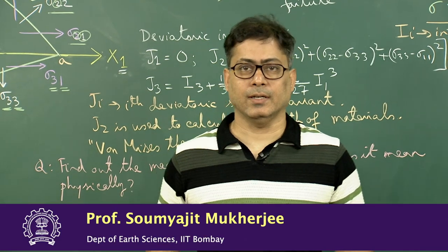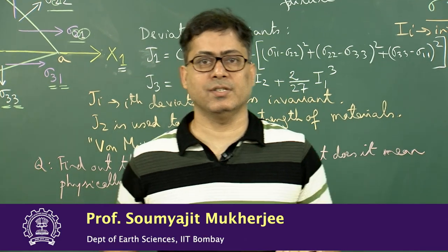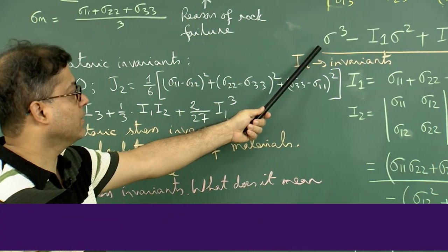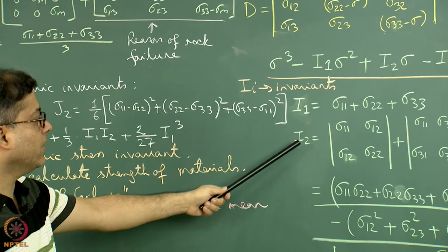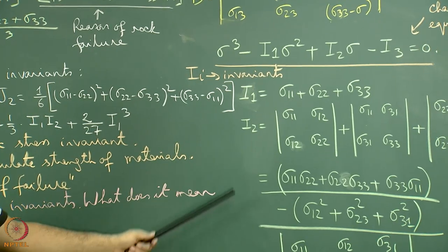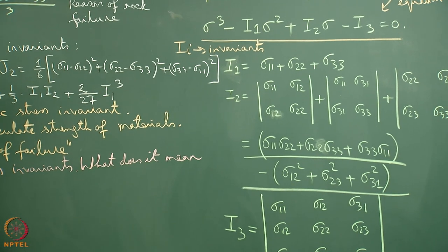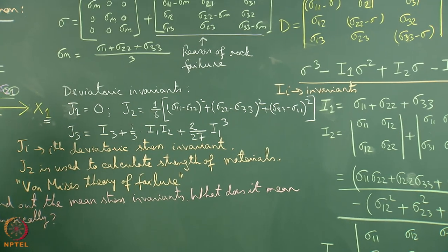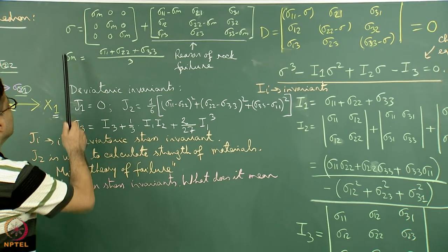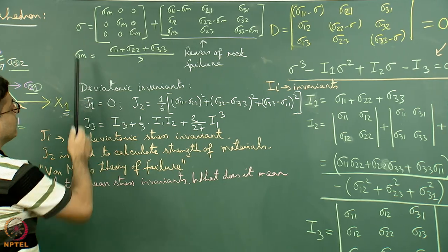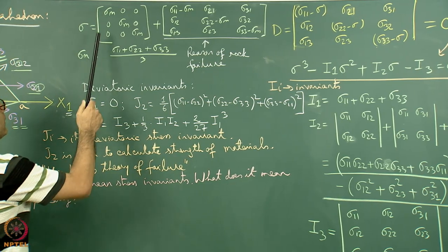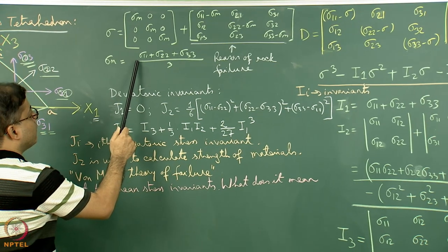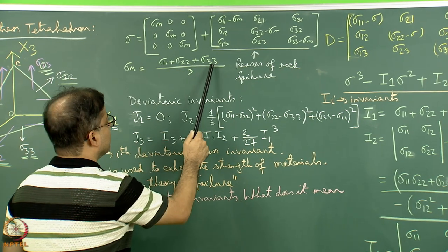We have seen, starting from the Cauchy stress tetrahedron, how to finally reach the characteristic equation and then i1, i2, i3 — the three invariants. Now we are going to see the applied stress in a different way. We are going to resolve the applied stress into a mean stress component, where sigma m is equal to sigma 11 plus sigma 22 plus sigma 33.